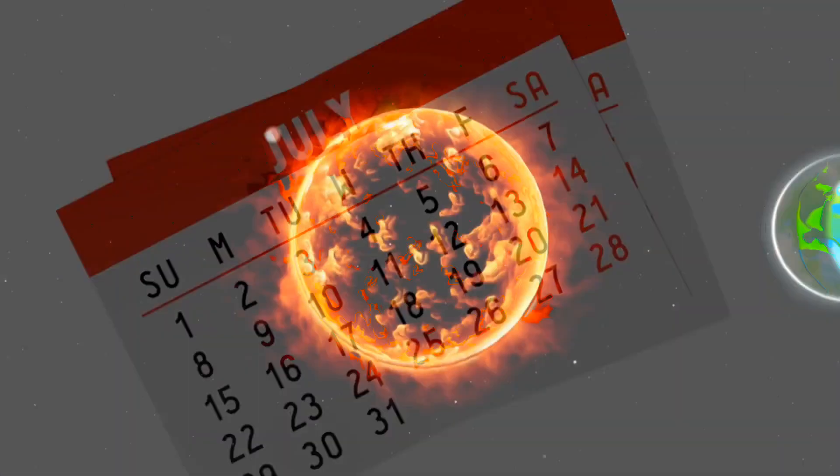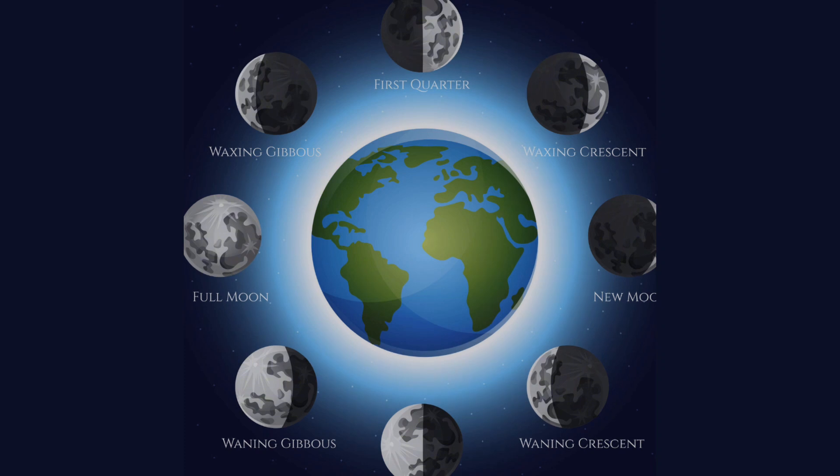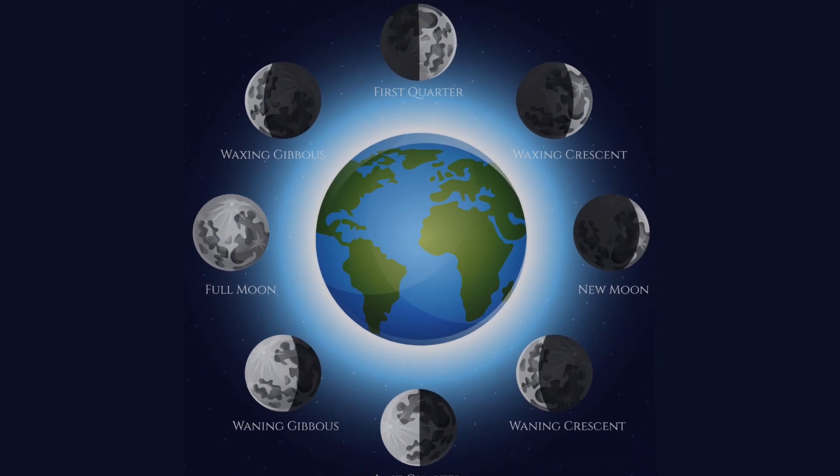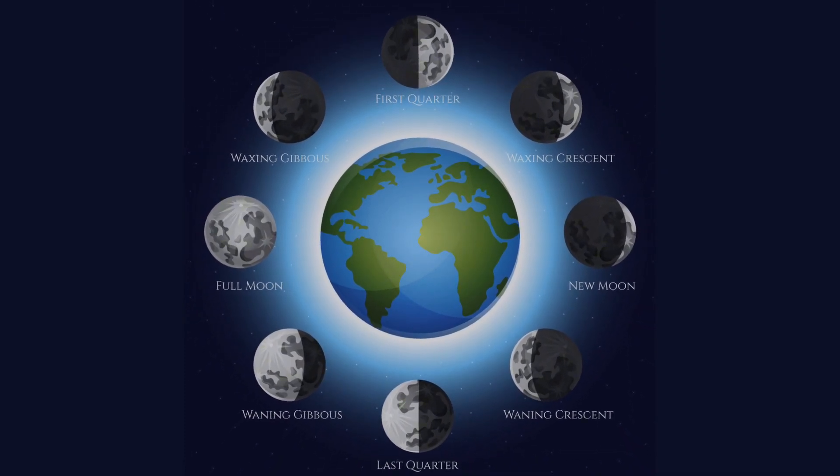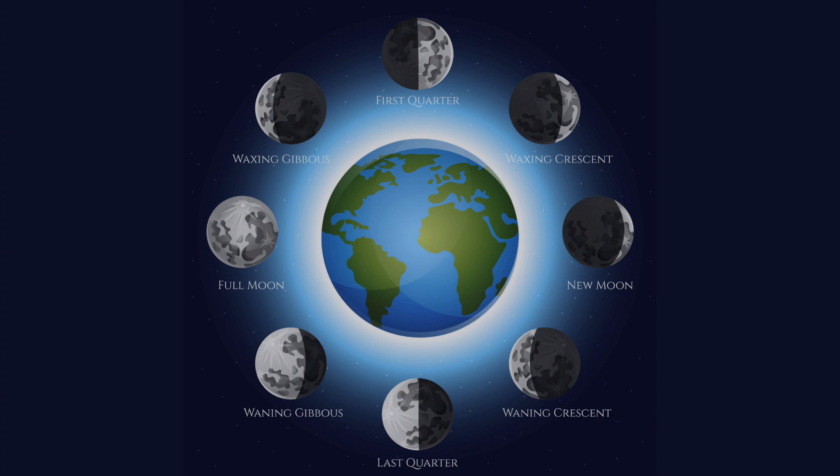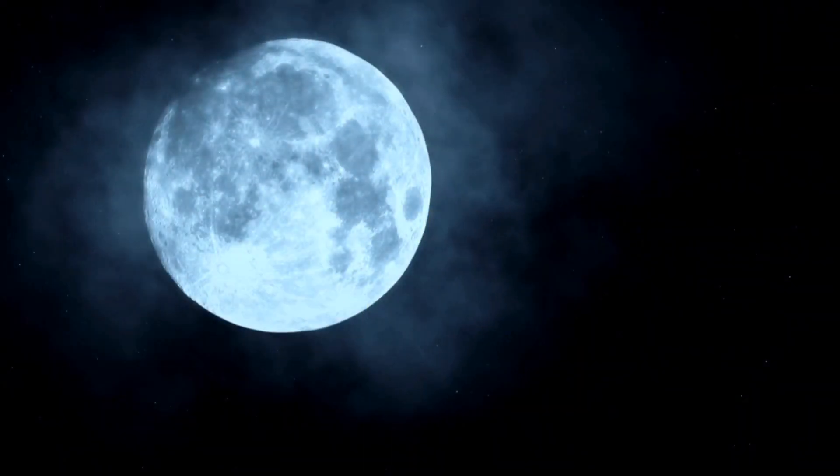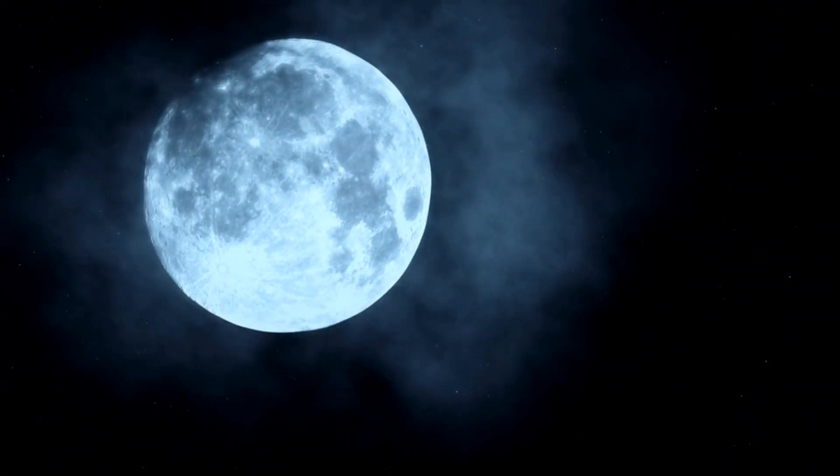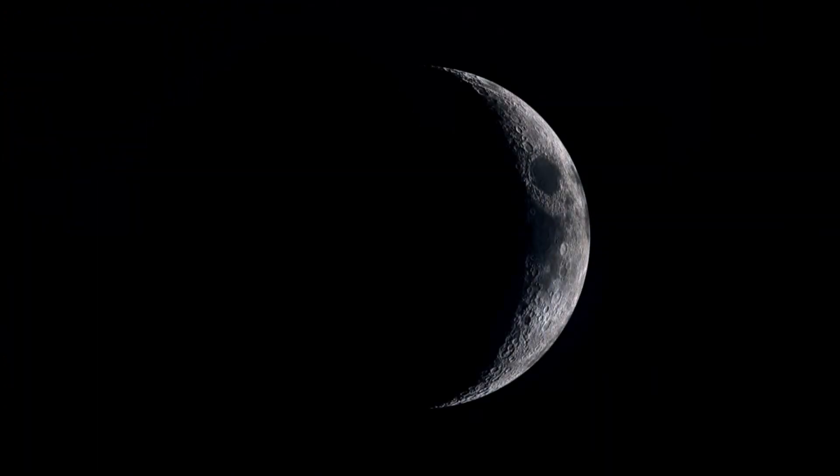The synodic month, on the other hand, is about 29.53 days long. It's the time it takes for the moon to return to the same phase, like from full moon to full moon and new moon to new moon, as observed from the Earth.